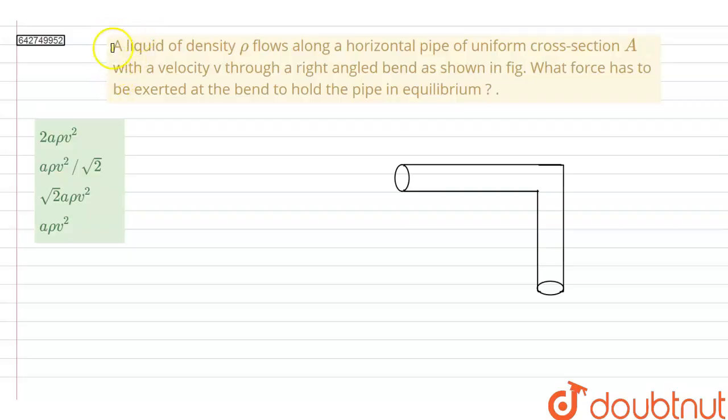Hello everyone. So in this question we have a liquid of density ρ flows along a horizontal pipe of uniform cross-section area A with a velocity V through a right-angled bend as shown in figure.